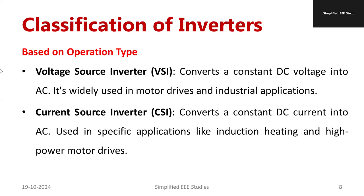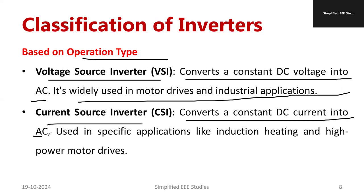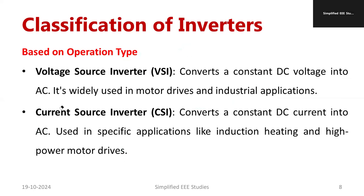According to the operating type, we have VSI and CSI. VSI is the voltage source inverter — it converts constant DC voltage into AC and is widely used for variable frequency drives and industrial applications. CSI is the current source inverter — it converts constant DC current into AC. The sources are different: VSI uses a voltage source while CSI uses a current source. Typical applications of CSI include induction heating and high-power motor drives. A separate video will cover the major differences between VSI and CSI, which is also an important interview question.